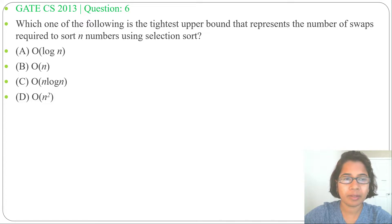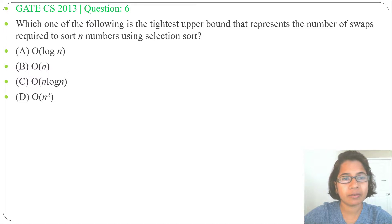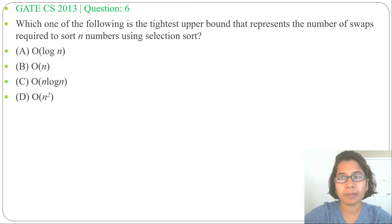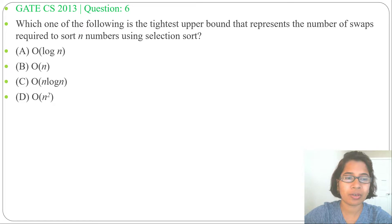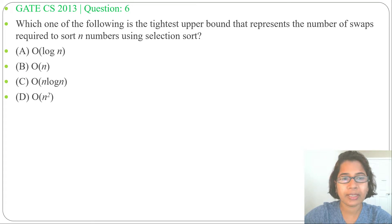Let's look at a previous question on the brute force approach. This question was asked in GATE CS 2013, question number six. Which of the following is the tightest upper bound that represents the number of swaps required to sort n numbers using selection sort? Four options are given.